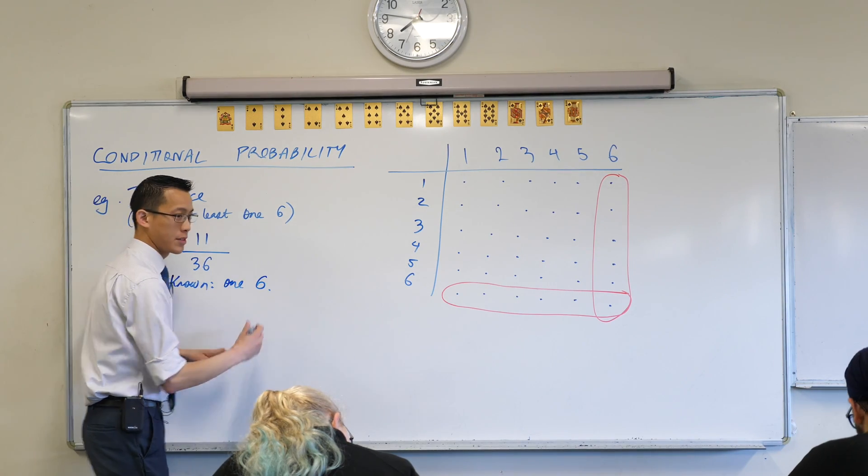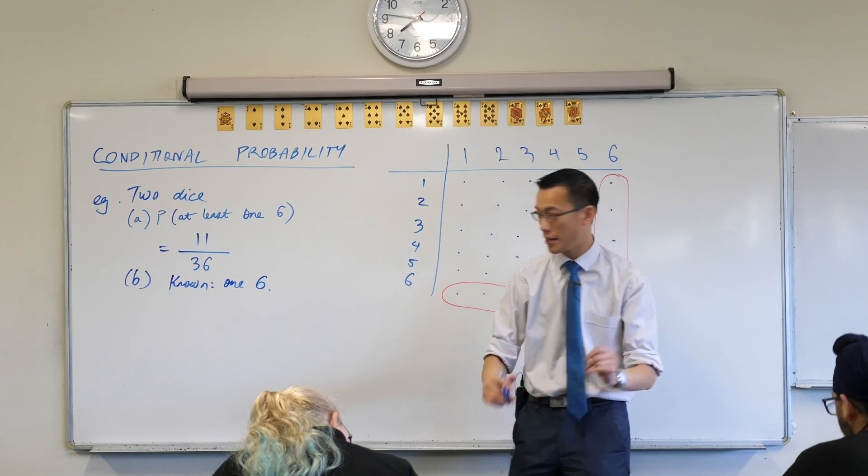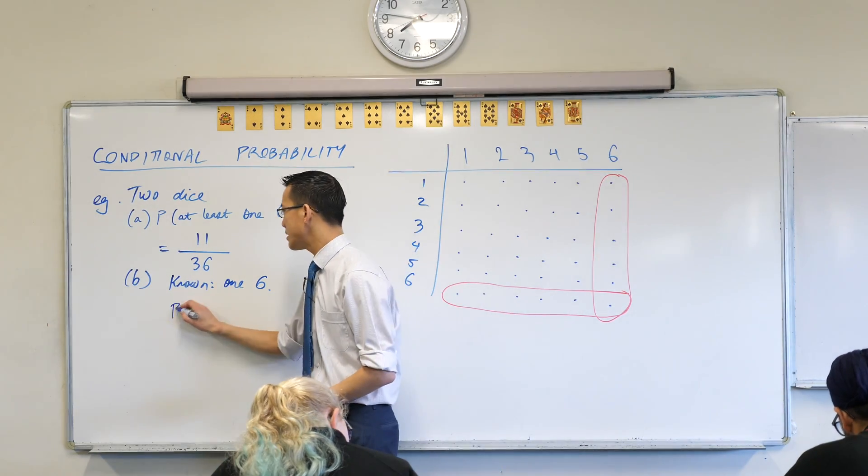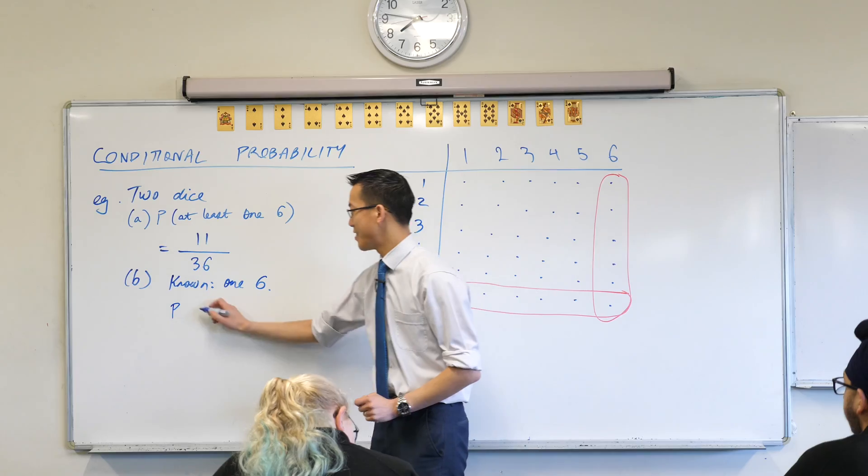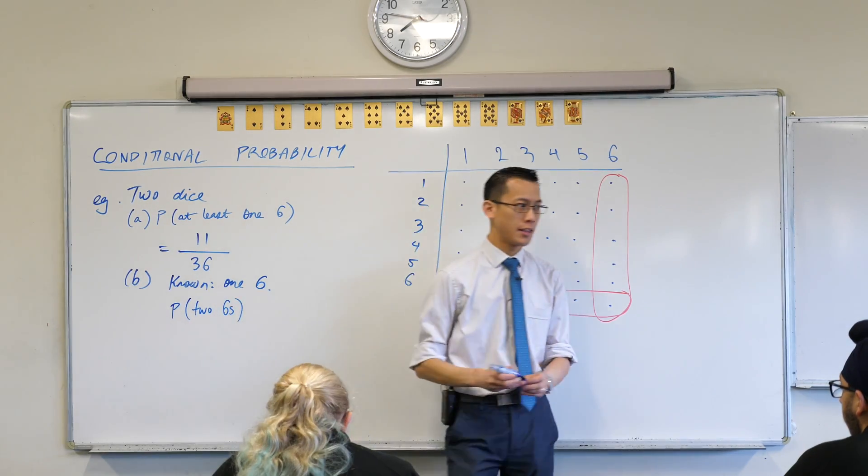Suppose it's known that there's one six. Now I'm going to ask you the probability of a different event. If this is what we know, what is the probability that we have two sixes? Think about it for a second.